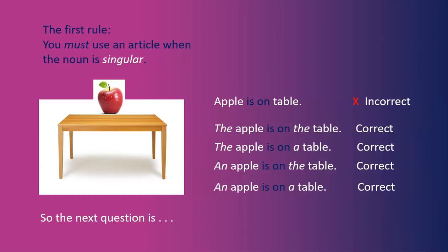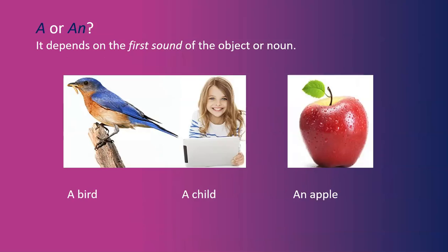So the next question is: when do you use 'a' or 'an,' and when do you use 'the'? For 'a' or 'an,' it depends on the first sound of the object or noun. If the first sound is a consonant sound, you use 'a' — for example, a bird, a child. If the first sound is a vowel sound, you use 'an' — for example, an apple. It's kind of difficult to say 'a apple,' so we say 'an apple.'